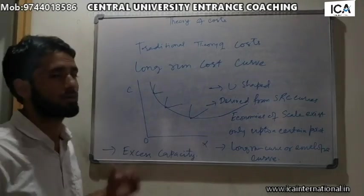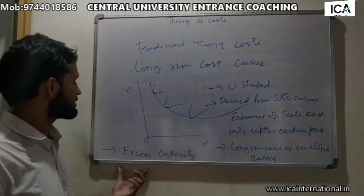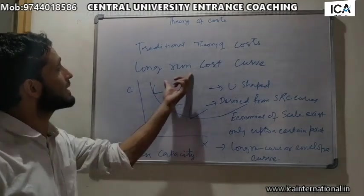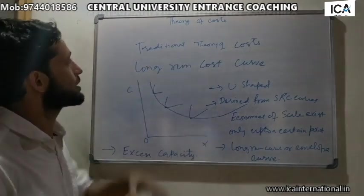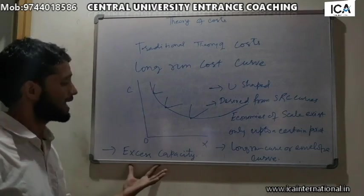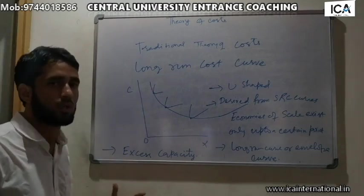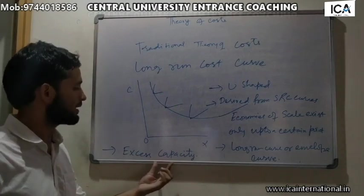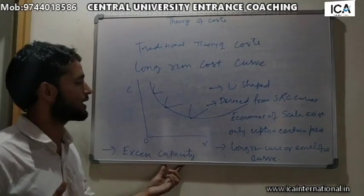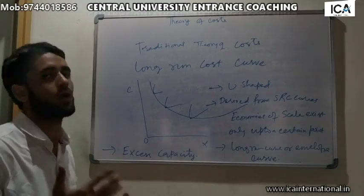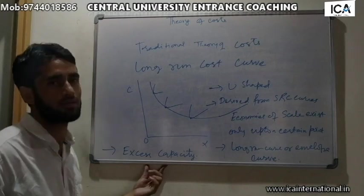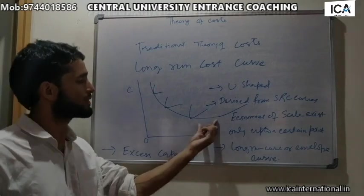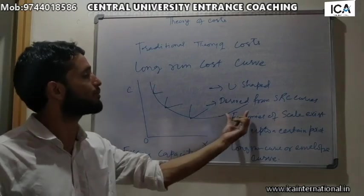One more point to remember here is excess capacity, which economists take into account under traditional theory of costs. In case of traditional theory of costs, in business sectors, whenever there is an increase in demand, supply is not increased accordingly — they have excess capacity. After that, when they can't increase their supply, their cost of production increases.